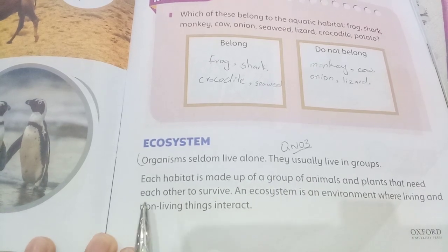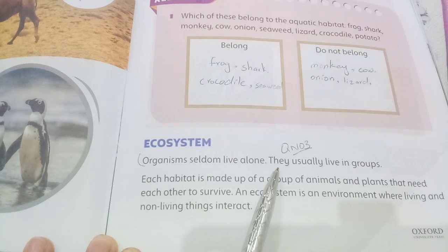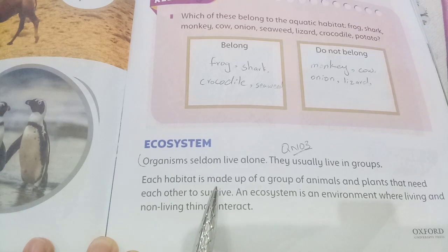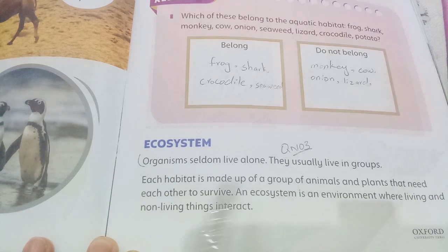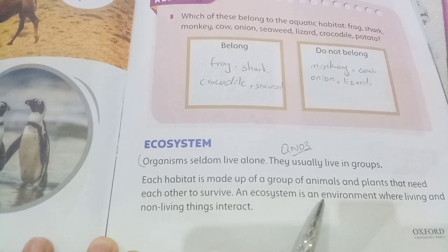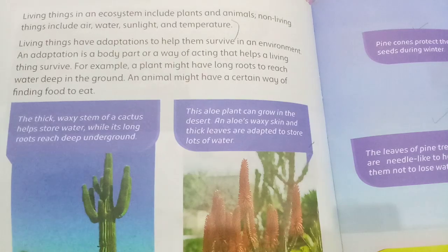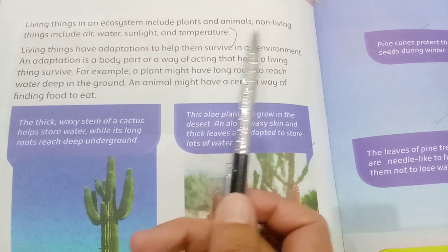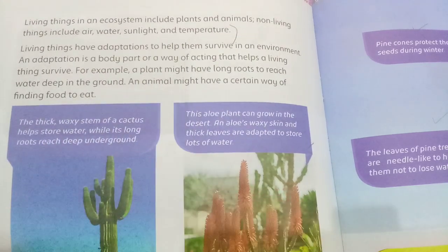Question three: what is an ecosystem? Organisms seldom live alone; they usually live in groups. Each habitat is made up of a group of animals and plants that need each other to survive. An ecosystem is an environment where living and non-living things interact. Living things in an ecosystem include plants and animals. Non-living things include air, water, sunlight and temperature.